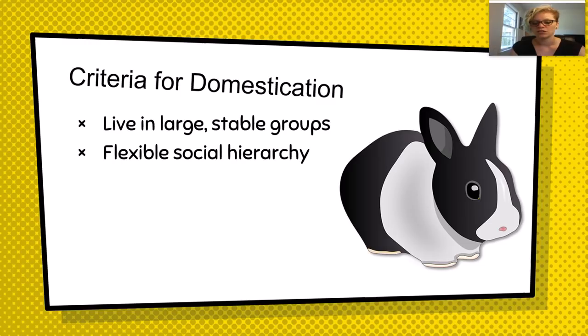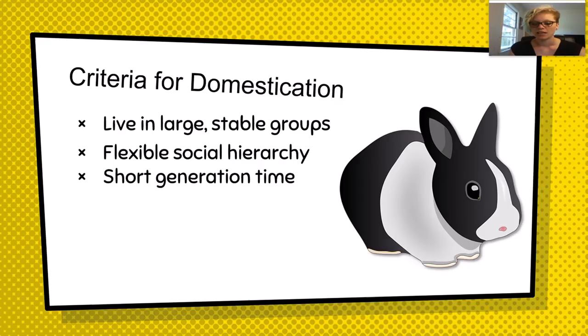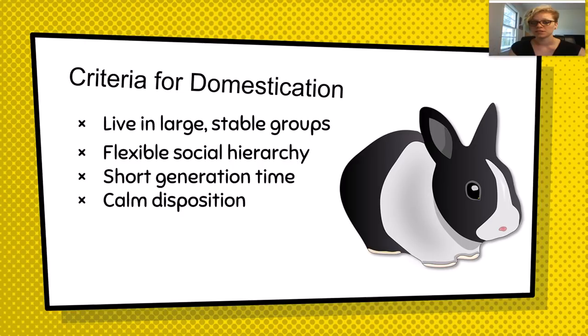Short generation times relative to the human lifespan also matter. Animals that reach maturity quickly can be produced faster and it is easier to keep track of their breeding. Animals like elephants, which can take up to 15 years to reach maturity, mean people could not easily breed many of them in their own lifetime. A calm disposition was also critical. Along with being incredibly adept at escaping, gazelle and antelope will panic easily. Even if they could not jump out of their enclosure, they could run headlong into a fence, and their flighty nature made it difficult for people to hold onto them.